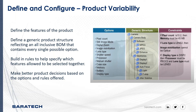Each of which has several different selections. You can define a generic product structure reflecting an all-inclusive BOM that contains every single possible option. Then we can go ahead and build in rules to help specify which features you wish to allow to be selected together.